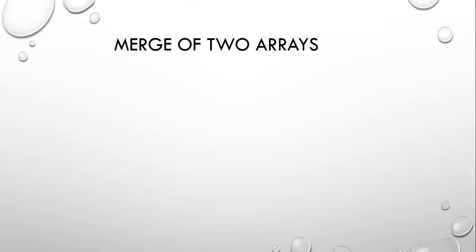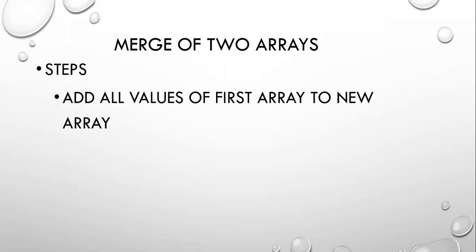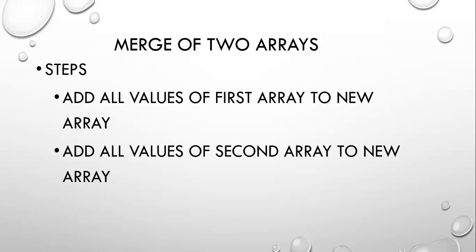So what we're going to do — we need three steps when you're going to merge two arrays. The first step is you need to add all the values of the first array into the new array. Take all the values that are in array one and put them into a brand new array. Then you can take all the values from the second array and put them into the new array that already has the first array's elements in it. That's what we're going to do for the second step.